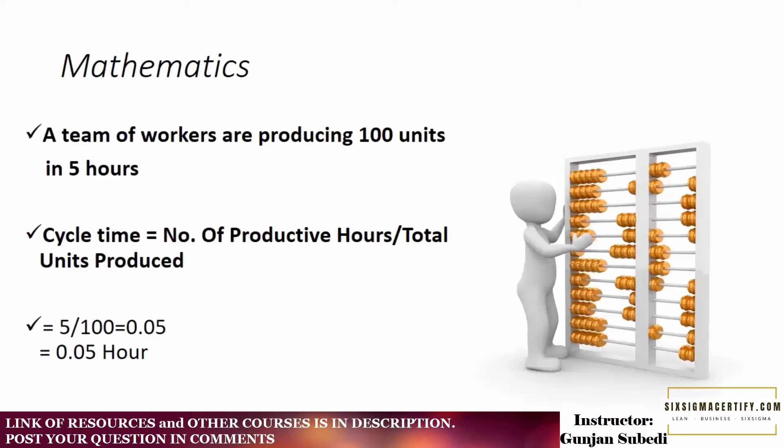Now let us understand this with the scenario here. Here it's given that a team of workers are producing 100 units in 5 hours. So the cycle time formula is number of productive hours that is 5 hours in this case divided by total units produced and the total units produced are 100. So the cycle time is the ratio of number of productive hours that is 5 divided by 100 which is the total units produced which gives us 0.05 hour. So our cycle time is 0.05 hour.